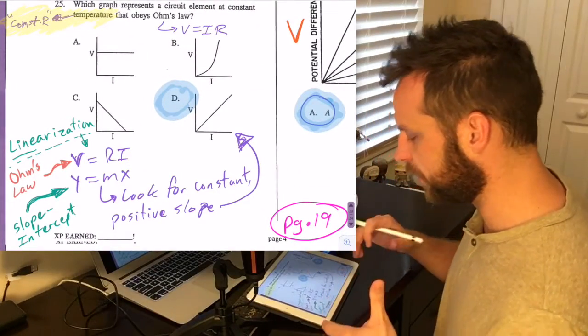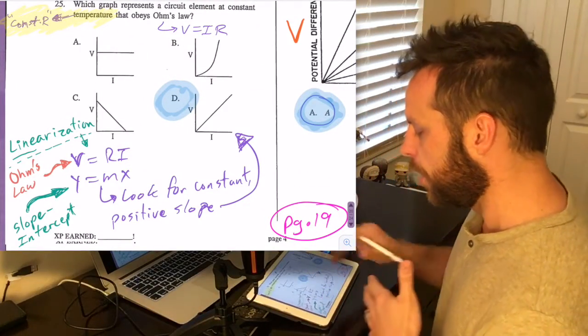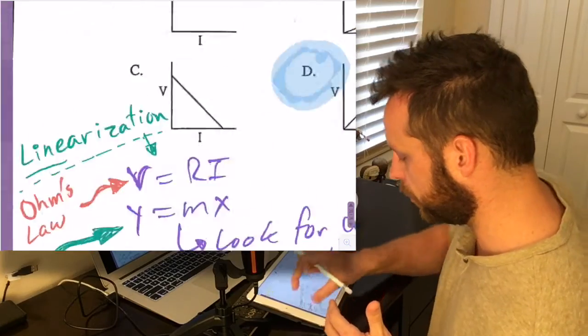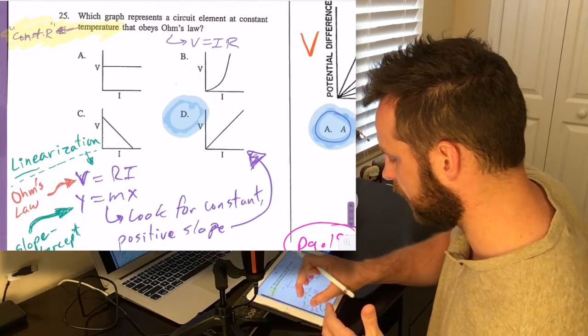I want to take you to an advanced skill here, number 25, where we're going to talk about this skill called linearization. Let's get into it.